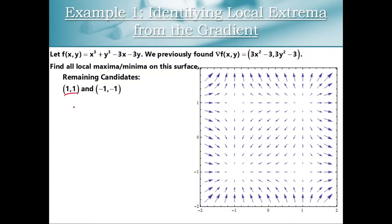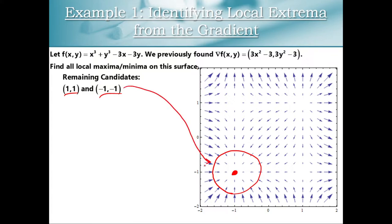So we have two candidates left: (1,1) and (-1,-1). We could classify those using a gradient vector field — for the point (-1,-1), if we draw a small neighborhood around that point, all the gradient vectors are pointing in towards that point. That's telling us the direction of greatest initial increase is toward this point, so we can surmise this is a local maximum.